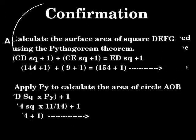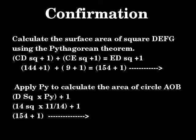Confirmation. Calculate the surface area of square DEFG using the Pythagorean theorem. CD squared plus 1 plus CE squared plus 1 is ED squared plus 1. Substituting: 144 plus 1 plus 9 plus 1 is 154 plus 1 which is 155.